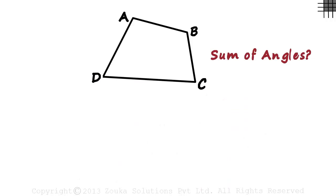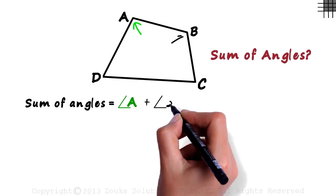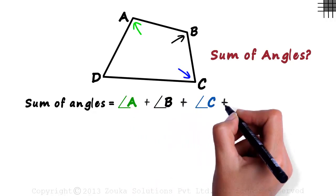We have to find the sum of angles of the quadrilateral ABCD. It's simple. The sum of angles is the measure of angle A plus angle B plus angle C plus angle D.